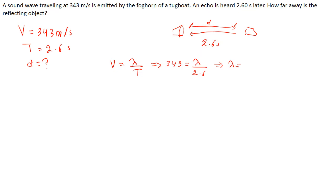...lambda is equal to... it will be 891.8 meters. Now this wavelength is the distance to go and to come back. So if we wanted to find d, we'll say d is equal to lambda over 2, which is equal to 891.8 over 2, and we will get 445.